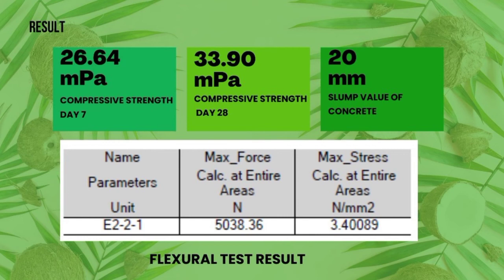We compiled the data into tables with parameters and units. The second table shows the maximum force calculation over the entire cross-sectional area, which we calculated as 5038.36 N. The third table shows the maximum stress calculation over the entire area, which is 3.40089 N per mm squared.